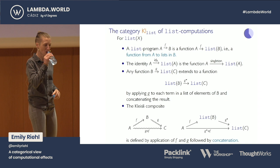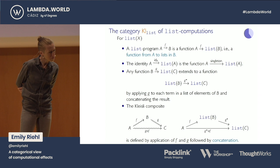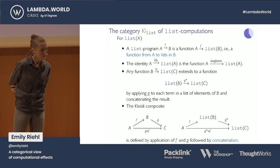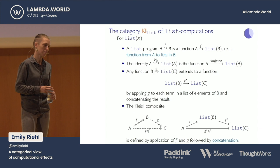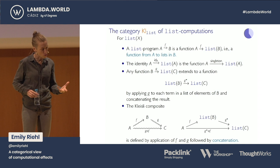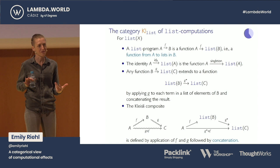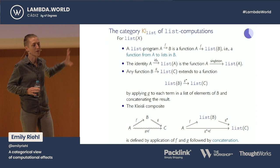Question: do these categories comprise only one kind of effect? Yes, that's correct. Each computational effect comes together with its own category of programs — this Kleisli category or category of programs — and that uniquely determines the computational effect. If you tweak your computational effect in some way, for instance using a slightly different composition rule, it will give you a completely different category of programs.